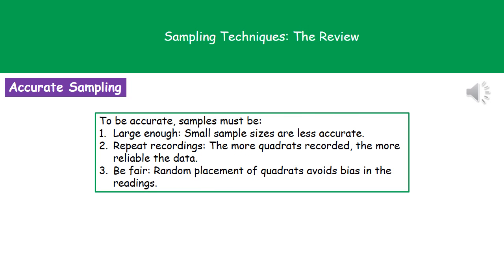Finally, to make our samples as accurate as possible, there are three key things to consider. First, we must have a large sample size — a small number of samples means any error gets magnified when we multiply up to the total. Second, we must repeat recordings; the more quadrats we record, the more reliable our data. Third, we need to be fair by using a random number generator to place quadrats, which eliminates bias. It's tempting after 20 quadrats with no daisies to place the next one where you can see one, but that introduces bias and leads to inaccurate data.